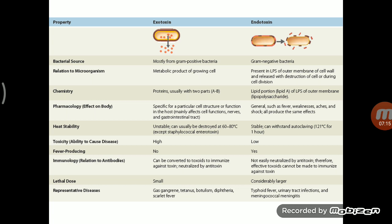Looking at the differences between exotoxin and endotoxin: exotoxin is produced mostly by gram-positive bacteria, whereas endotoxin is produced by gram-negative bacteria. Regarding toxicity, exotoxins are highly toxic compared to endotoxins — a little dose of exotoxin is more toxic than endotoxin. Disease conditions from exotoxin include gas gangrene, tetanus, botulism, diphtheria, and scarlet fever. Endotoxin produces conditions like UTI (majority caused by E. coli) and meningococcal meningitis.